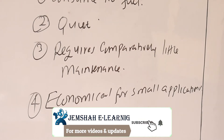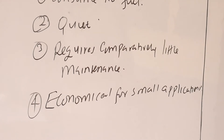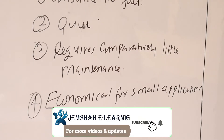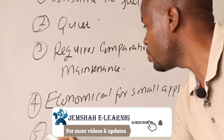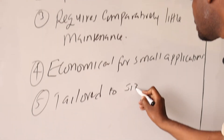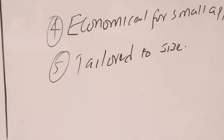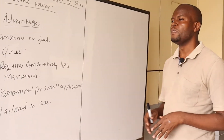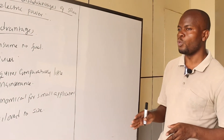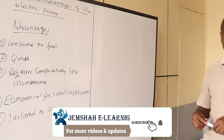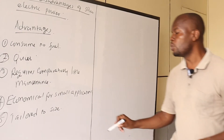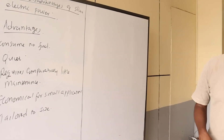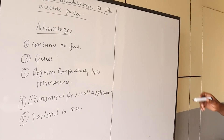Solar PV systems can always be tailored to size. They can be customized to the size of the application needed, be it lighting, pumping, or audiovisual, and are easily expanded as demand increases. If your load demand is bigger, the designer will come up with the appropriate design for you. There is no one-size-fits-all design; it can always be customized to the needs of the customer.